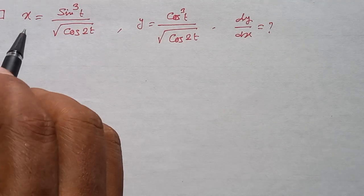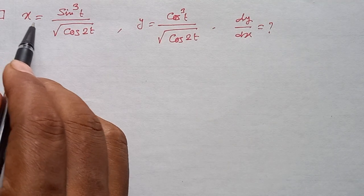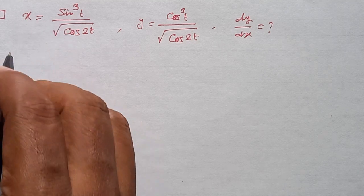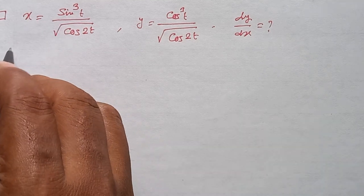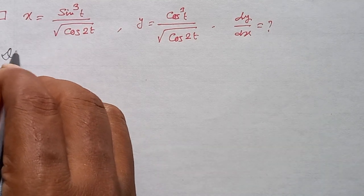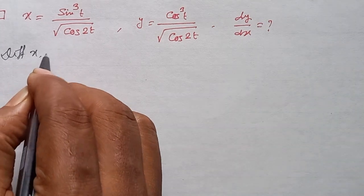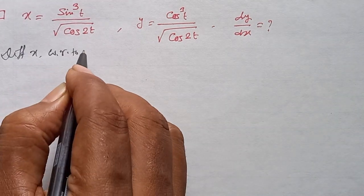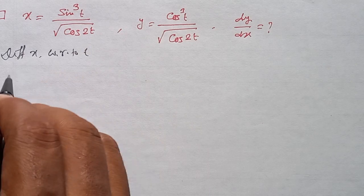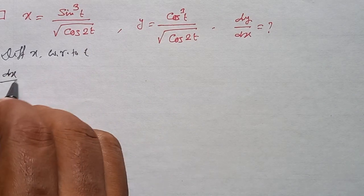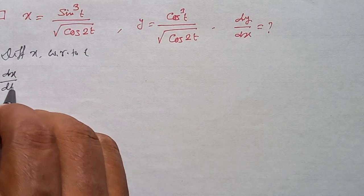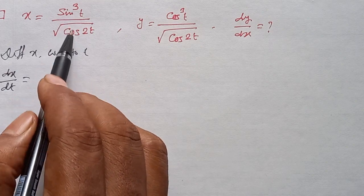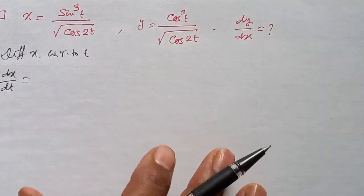Differentiate x with respect to t to get dx/dt. We apply the u by v form (quotient rule) to differentiate x with respect to t.